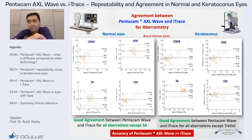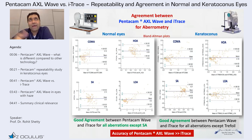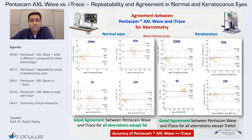We also looked at the impact of tear optics on repeatability. The analysis is still ongoing so I haven't added it here. It's very interesting — when you have a Placido-based system and ray tracing aberrometers with fewer spots, you do have a lot of variation because of tear film, which was not seen with WAVE. This is a very interesting finding, especially now when many people have ocular surface issues.